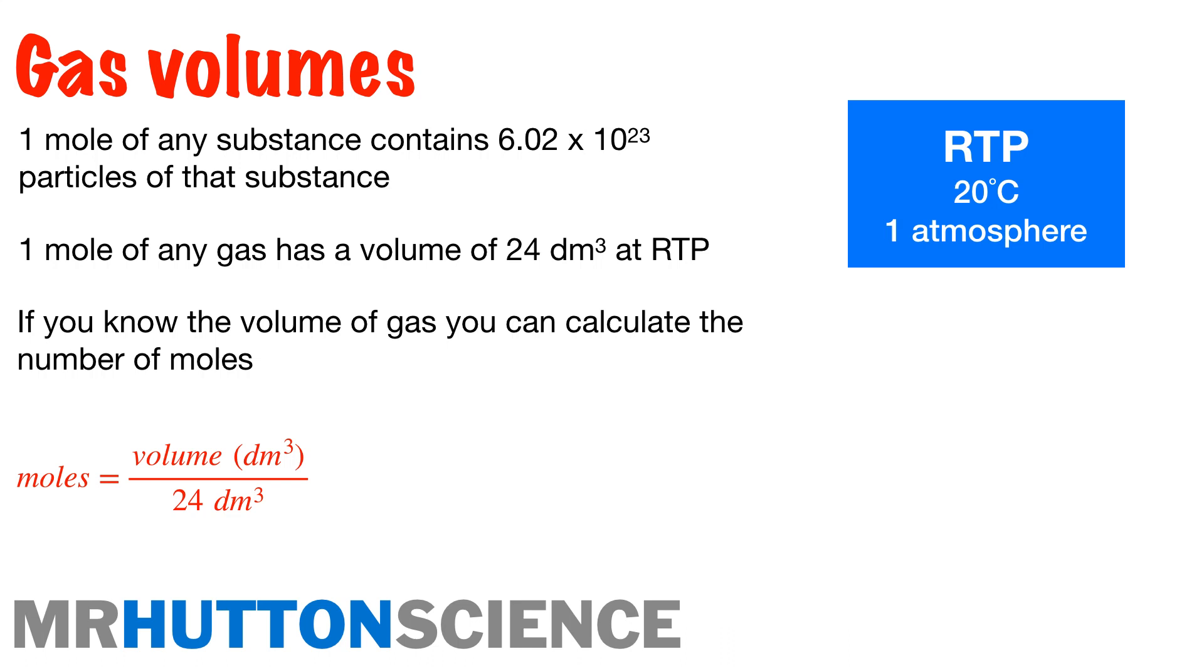We can also look at this in terms of centimetres cubed. So we could have our volume given to us in centimetres cubed, and therefore we would have to divide by 24,000 centimetres cubed. Because remember our conversions between centimetres cubed and decimetres cubed? If we're going from decimetres cubed to centimetres cubed, we need to multiply by a thousand. So generally for this, you need to remember that one mole of any gas has a volume of 24 decimetres cubed. That's the kind of only bit here that you've got to remember off by heart.